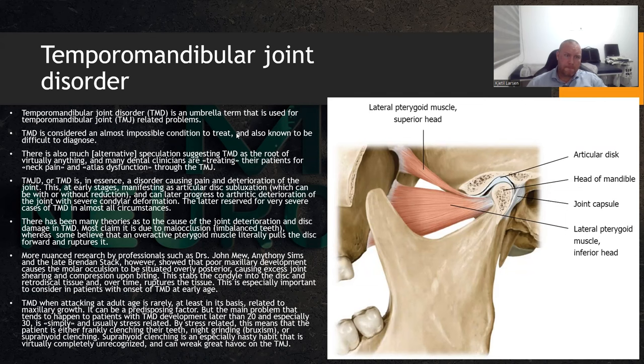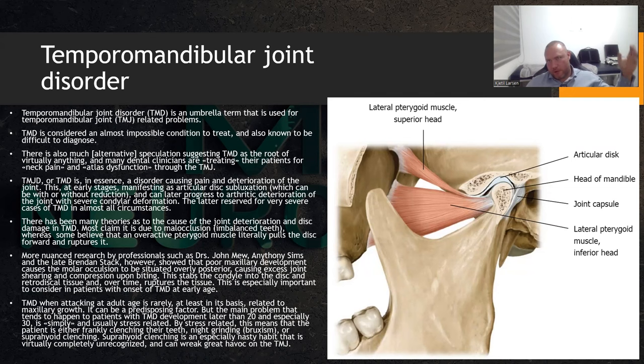TMD in essence is really a problem that causes pain and deterioration of the joint itself. That can lead to secondary issues such as dysfunction of the muscles, and also impingement of the nerve in the back, which can cause tertiary problems. There are many theories with regards to what the origin and actual mechanism of the initial joint degradation is.